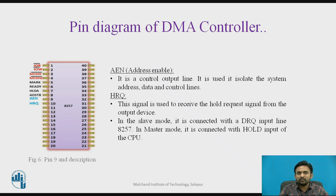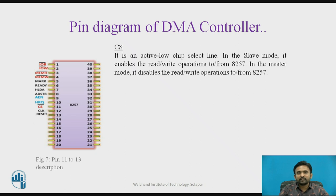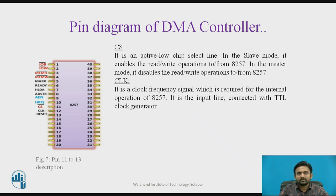The next pin is HRQ — this signal is used to receive the hold request signal from the output device. In the slave mode, it is connected with the DRQ input line of 8257. In the master mode, it is connected with the hold input of the CPU. About CS — it is an active low chip select input line. In the slave mode, it enables the read-write operation of 8257. In the master mode, it disables the read-write operation. The CLK pin is the clock frequency signal required for the internal operation of 8257.